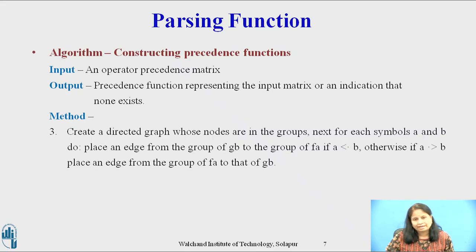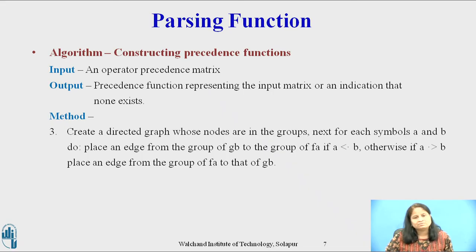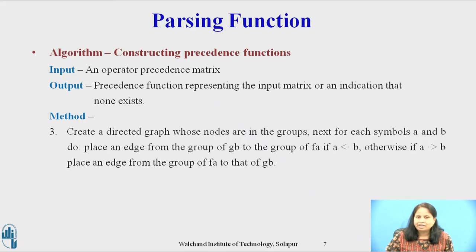Step 3: create a directed graph whose nodes are the groups. For each symbol, if a yields precedence to b, place an edge from the group of g(b) to the group of f(a). If a takes precedence over b, place an edge from the group of f(a) to the group of g(b). An edge or path from f(a) to g(b) means f(a) must exceed g(b); a path from g(b) to f(a) means g(b) must exceed f(a).